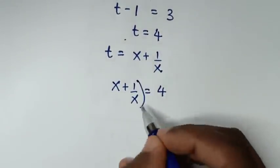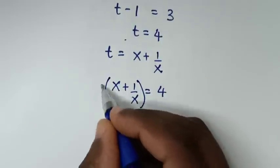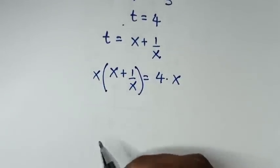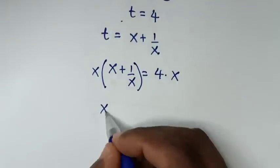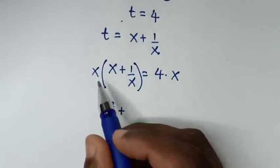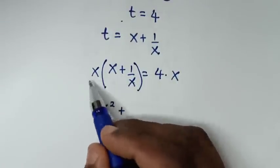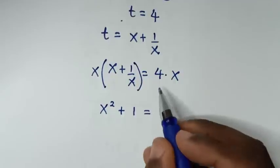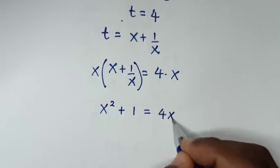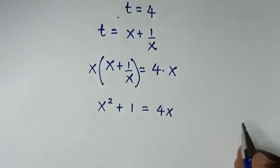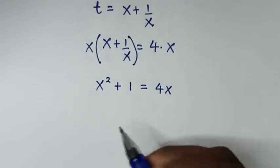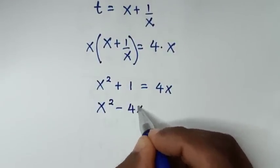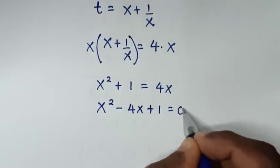So x plus 1/x equals 4. To remove the fraction we multiply both sides by x: x times x is x², plus x times 1/x — x cancels — leaving 1, equal to 4x. Taking 4x to the left side gives x² minus 4x plus 1 equal to 0.